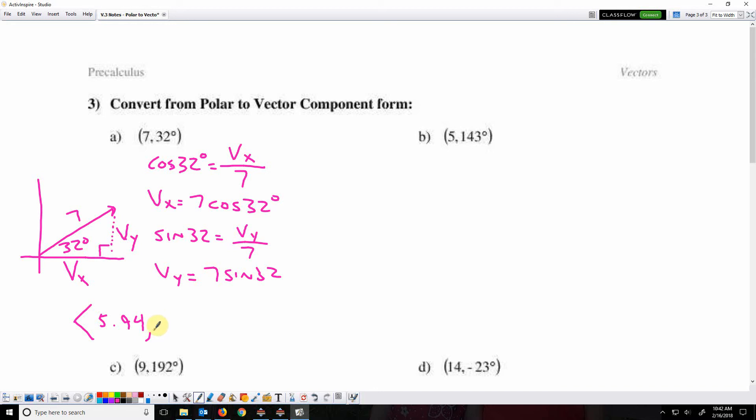Okay, and when I multiply 7 by sine 32, I get 3.71. So here we are in component form. Now we're going to shorten that up by using some things that we already know and combining them with what we just did here.